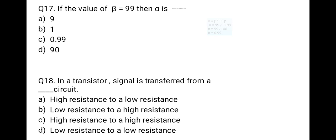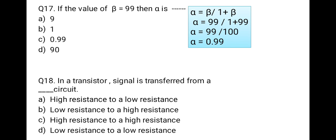The next question: if the value of beta is 99, then alpha is — the formula relating alpha and beta is: alpha = beta / (1 + beta). Substituting beta = 99: alpha = 99 / (1 + 99) = 99 / 100 = 0.99. The correct option is C.